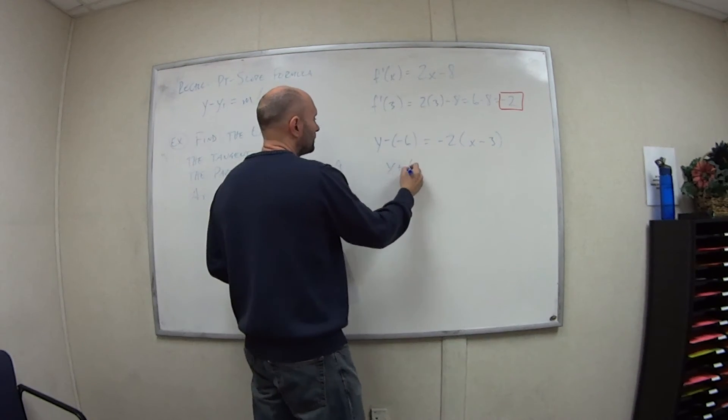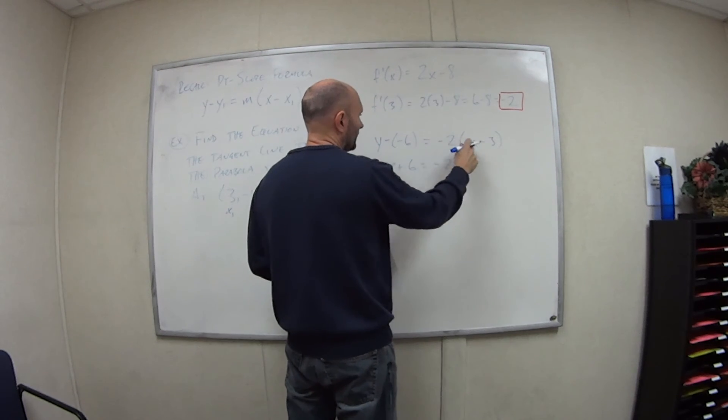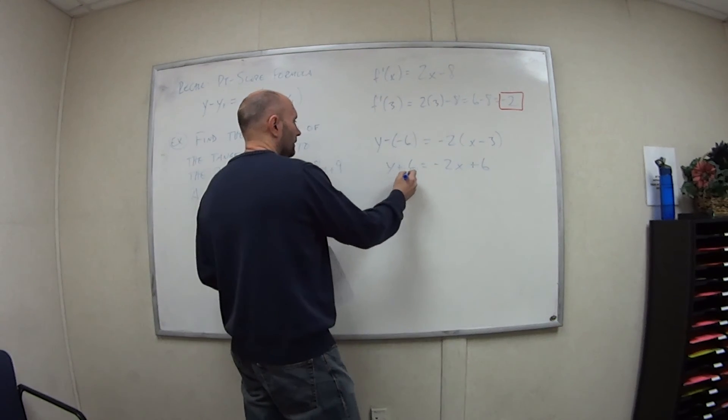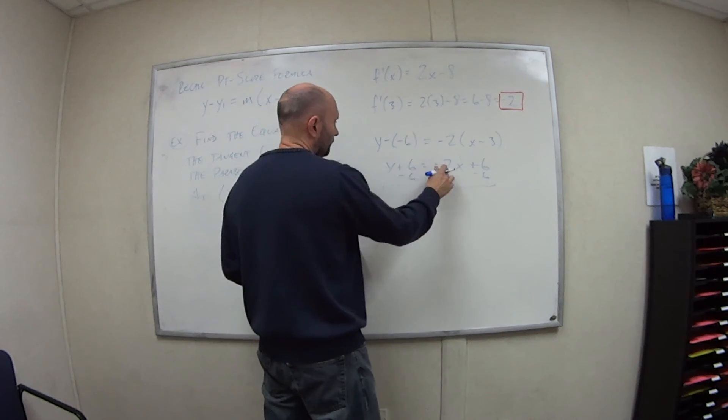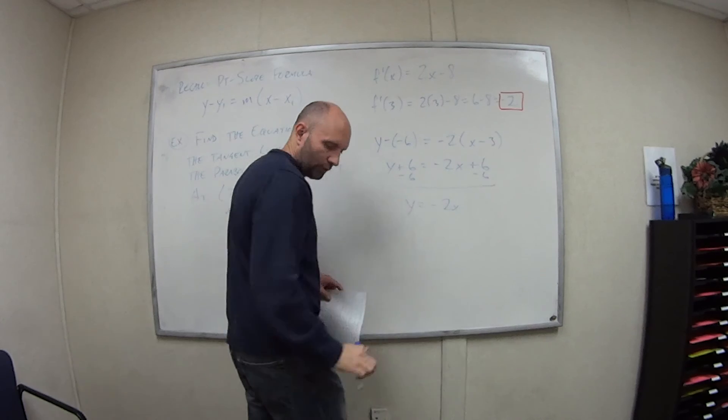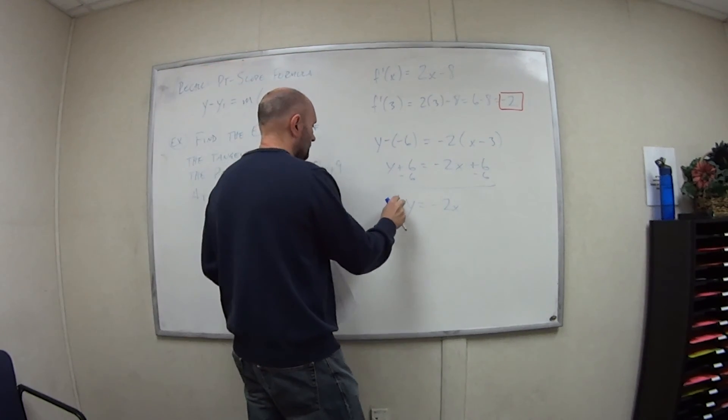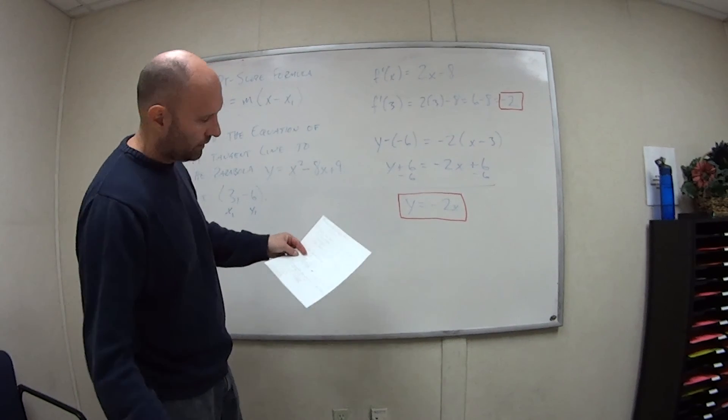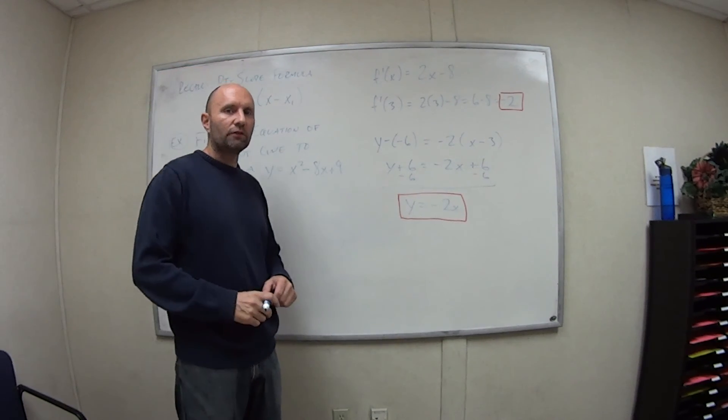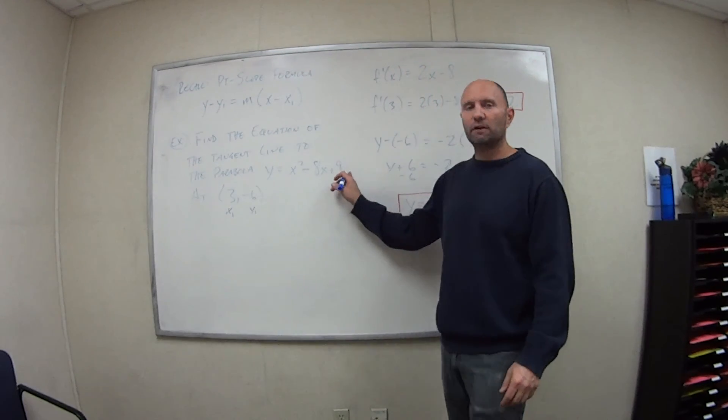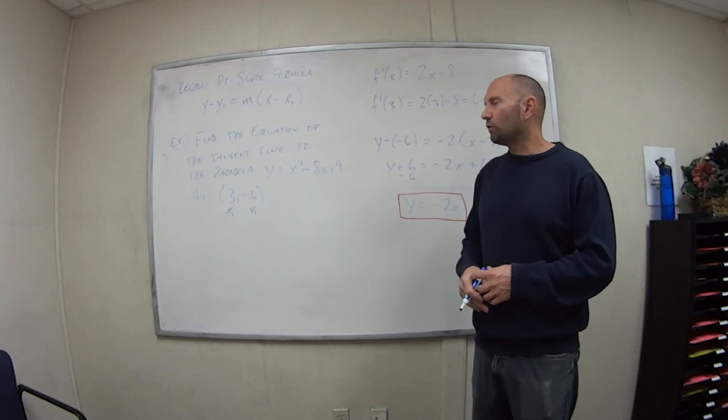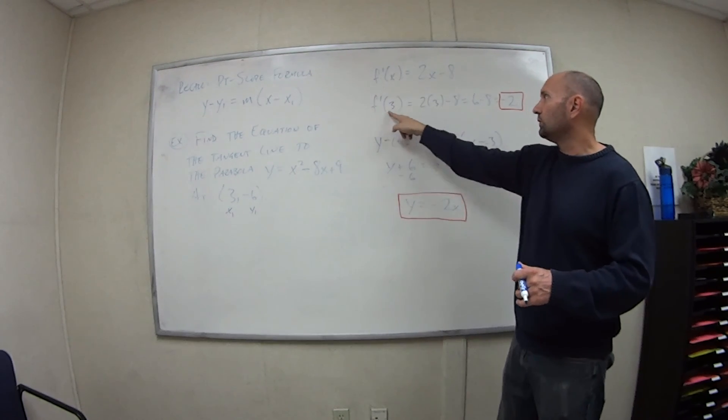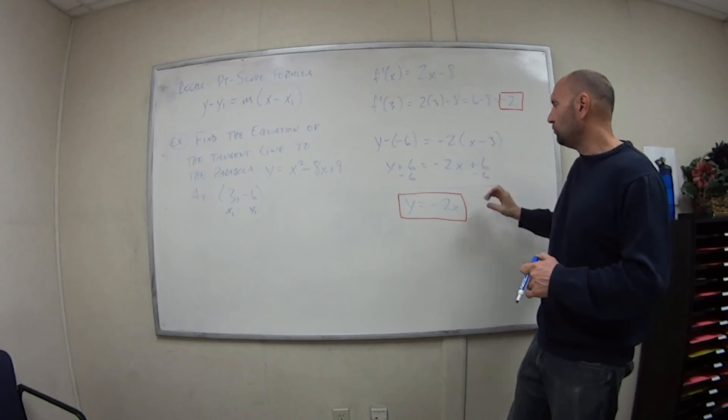So we simplify this so we get y plus 6 equals negative, and I'll distribute here. So negative 2 times x is minus 2x. Negative 2 times negative 3 is plus 6. So subtract 6 from both sides. We get y equals minus 2x plus 0. So that means the equation of the tangent line at the point (3, -6) of this parabola is equal to y equals minus 2x. So you can see that shortcut will save us a lot of time. If we had to figure this out the long version, that's going to take up most of the problem. But once we do the shortcut, we get what the derivative is, then no matter where we're at on this curve, plug that value into the derivative gives us our slope, and then use point slope formula and simplify.